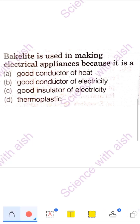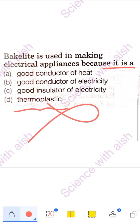Now you can see Bakelite, melamine, Teflon — these are the same questions. Bakelite is used in making electrical appliances because it is a bad conductor of electricity. If it were a good conductor, there would be sparking. We established earlier that thermoplastic doesn't apply here. Plastic is not a good conductor of electricity, and it is also not a good conductor of heat.